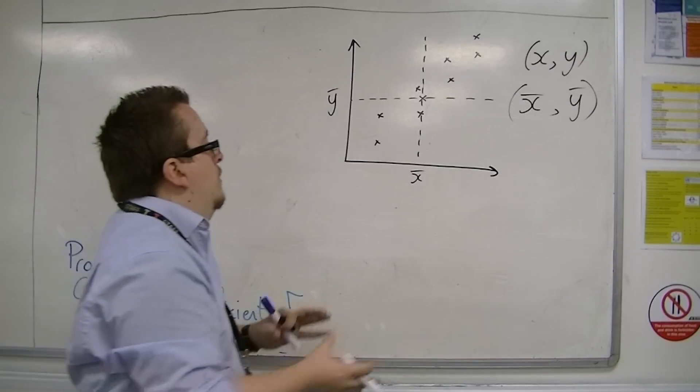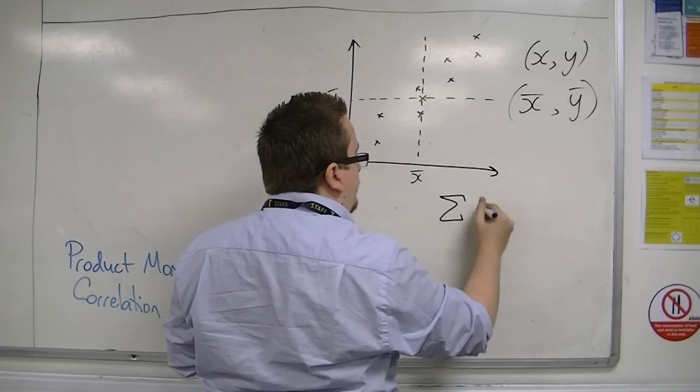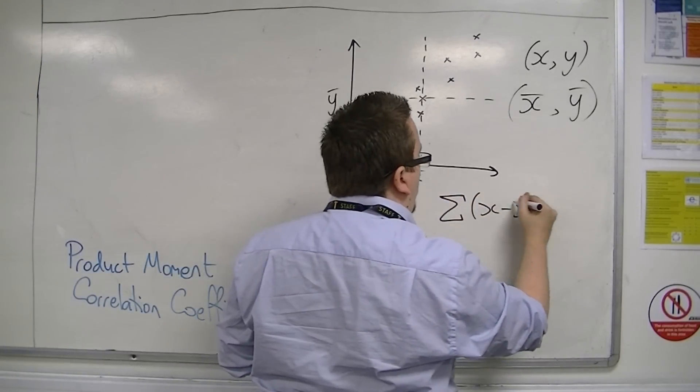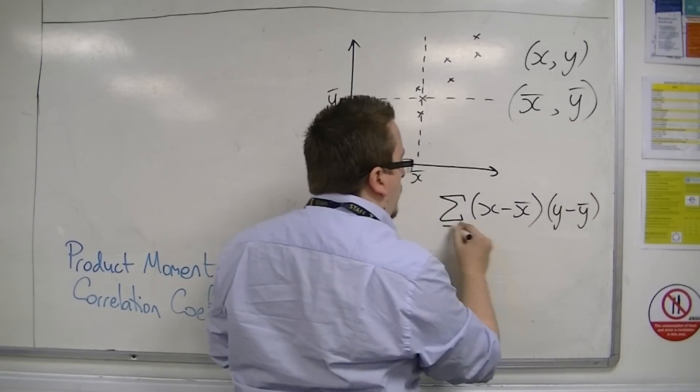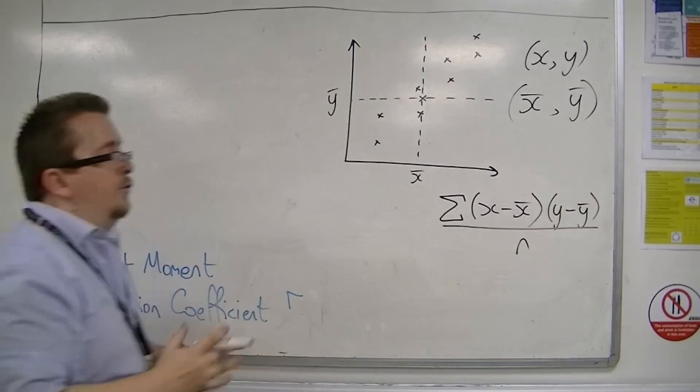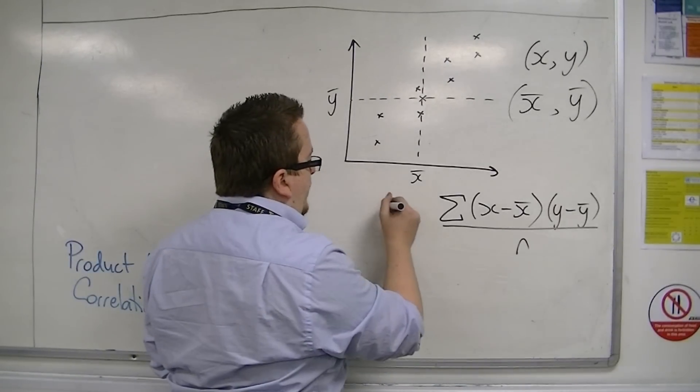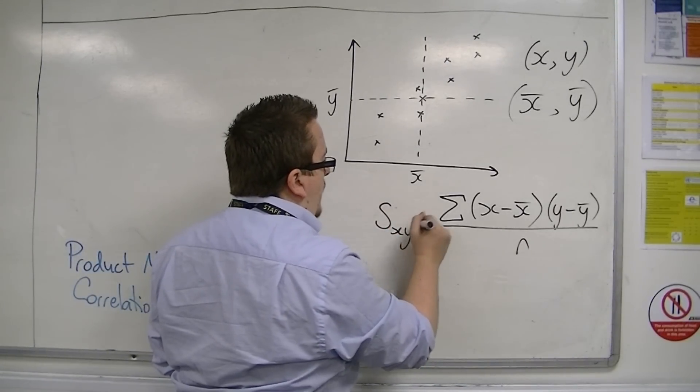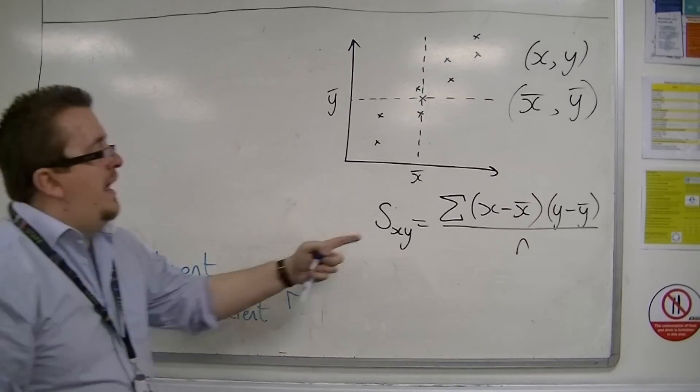The covariance is calculated to be the sum of x minus the x-bars multiplied by the y minus y-bars, all over n. This is the covariance and is often signified as S of xy.